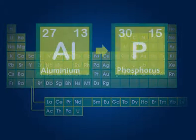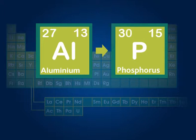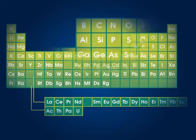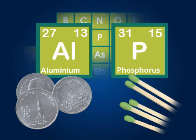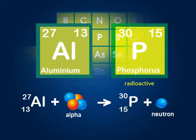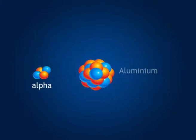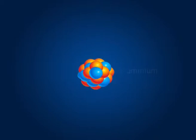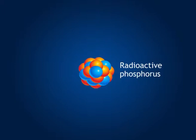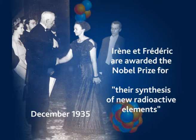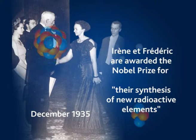Bombarding a sheet of aluminum with particles emitted by polonium, they discovered by chance that some of the aluminum was transformed into radioactive phosphorus. This radioactive form of phosphorus does not exist naturally. It is possible, then, to produce radioactive atoms, or radioisotopes, artificially.